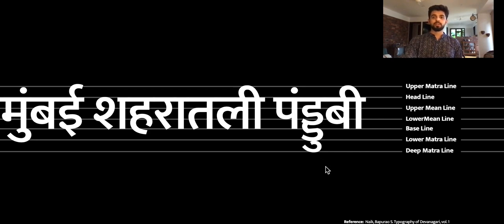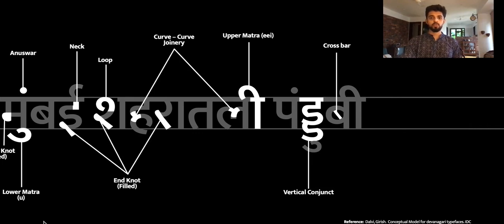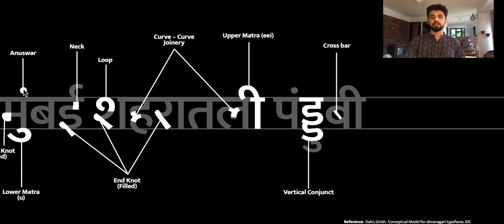To proceed we need to identify different features. The first one is the middle knot. There are two types of knot: a middle knot and an ending knot. The second feature at the bottom is the U matra, which is also a descender. There is an anuswar, which is similar to a tittle on the top of a lowercase i. The next one is an ending knot, which ends at the ending of the letter because that's how the letter is written.